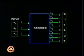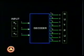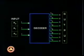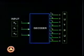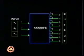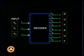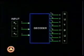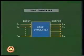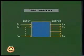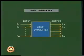A decoder accepts a binary word as input. Depending on the input word, only one of its output lines would be active. In the example shown, the input word is three and consequently only output number three is active.